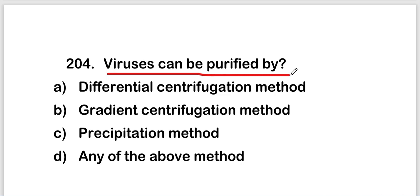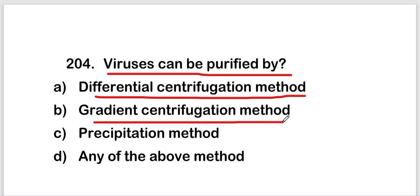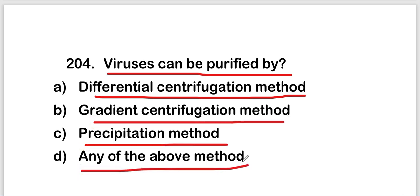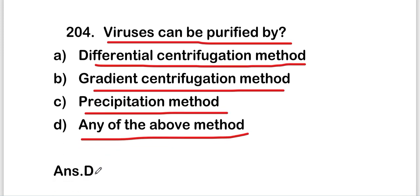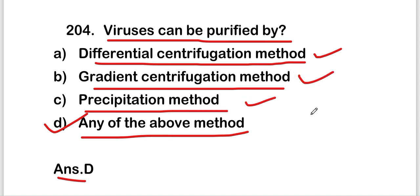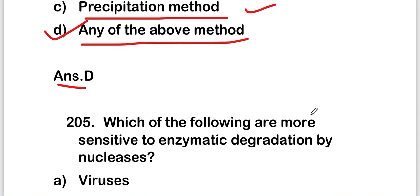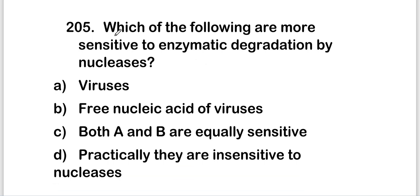The next question is: viruses can be purified by differential centrifugation method, gradient centrifugation method, precipitation method, or any of the above. The right answer is option D, that is any of the above. Viruses can be purified by differential centrifugation, gradient centrifugation, or precipitation methods.